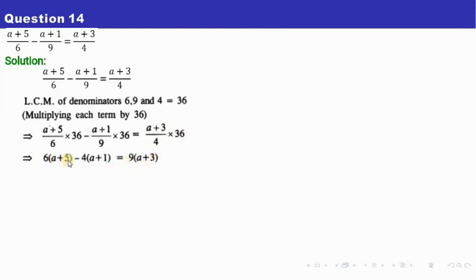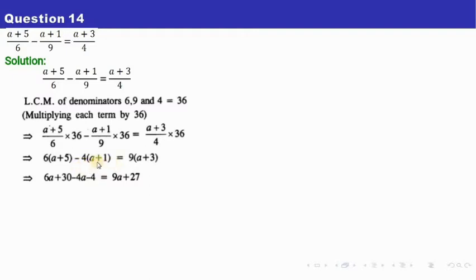Our next job is to open up the bracket by multiplying with the number outside. So 6 times a is 6a, and 6 times 5 is 30. Now we have a minus sign here — minus times plus gives minus — so 4 times a is 4a and 4 times 1 is 4, both with minus sign. Most students get confused here: whenever you have a minus sign outside a bracket, the signs inside get opposite. The sign of a here is plus, so it becomes minus; the sign of 1 is plus, so it becomes minus.